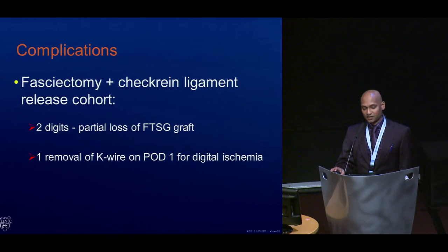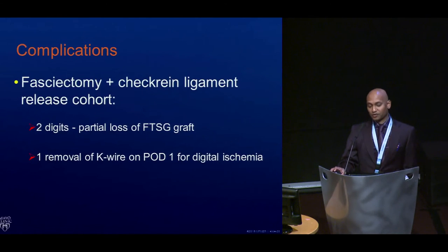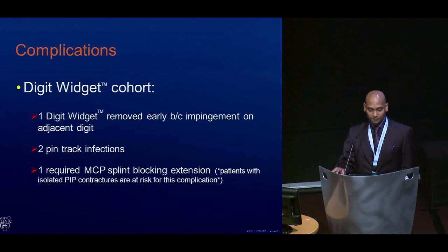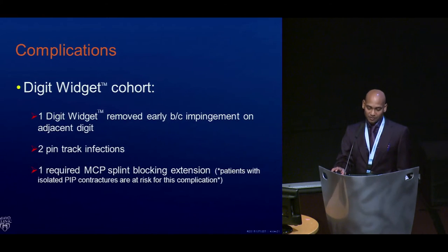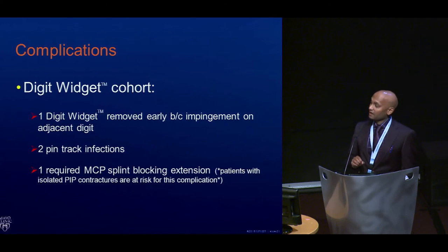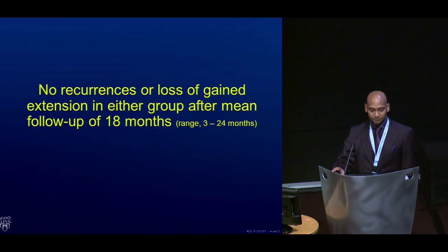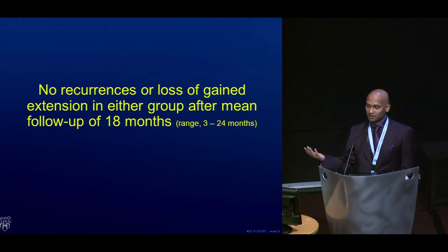Complications in the fasciectomy and check rein ligament release cohort included two partial losses of full-thickness skin grafts and one K-wire removal — noting that this cohort also had K-wires placed as internal splints during healing. The digit widget cohort had two pin track infections, one removal due to improper placement causing impingement on an adjacent digit, and one MP joint hyperextension complication, which led to the addition of an MP flexion strap by the manufacturer.